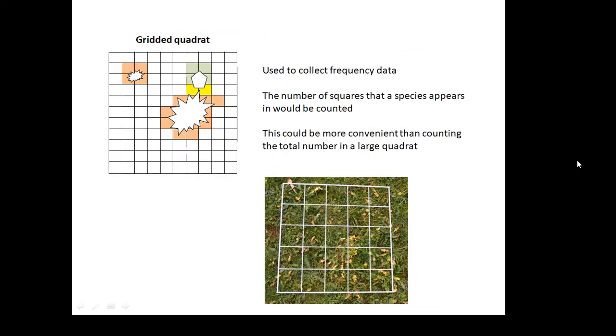A gridded quadrat, different ways you could use one of these. They're used to collect frequency data. In other words, how many. You could, for example, say how many squares have got a daisy in them. If you've got a gridded quadrat here, this one's got 25 little squares. So how many of those little squares have got a daisy in them? Three out of 25. 20 out of 25.